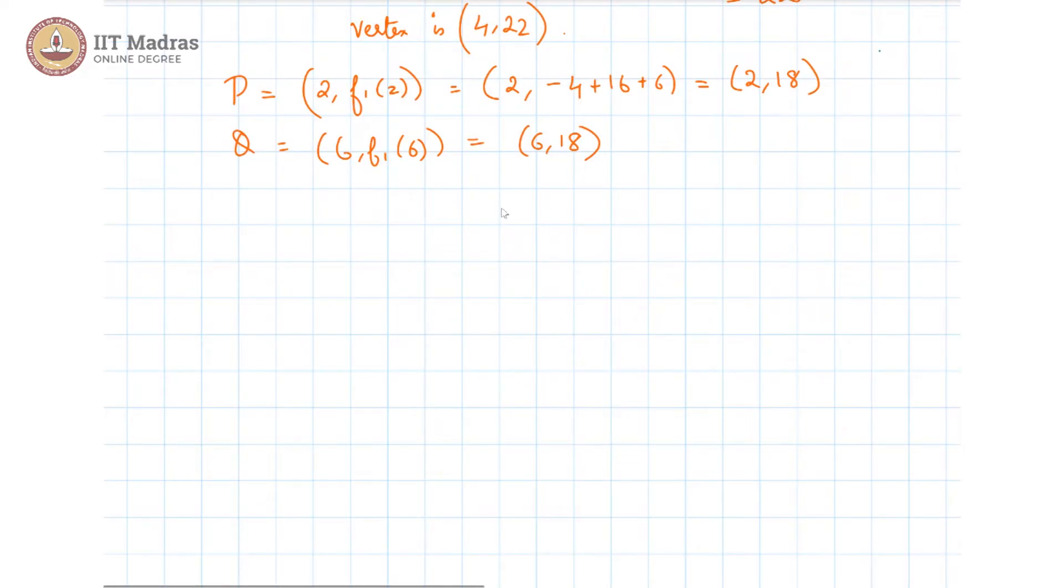Now let us suppose that this point here, let us call this our 4 comma 22. In that case 18 is 4 units below. So this will be the horizontal line passing through 18, and 2 will be here. So 2 comma 18 is here and this gives us 6 comma 18 is here. This is 2 comma 18 and this is 6 comma 18. And that gives us a parabola which looks something like this, obviously a smoother curve than I have drawn, but something like this.